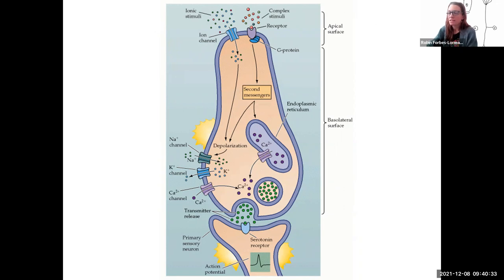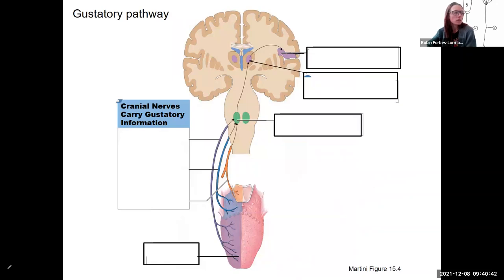Last thing for taste. We've got our action potential in this sensory neuron. We're going to carry that to the brain, so we are going to start down at the tongue again, and taste is unique because there's multiple cranial nerves that carry the information. It's fairly complex. So here's our taste receptors. And we need to get those signals, where? Up here to the gustatory cortex. Gustatory means taste, remember.